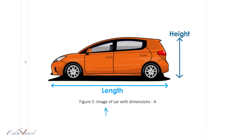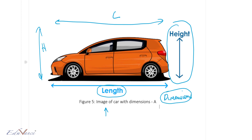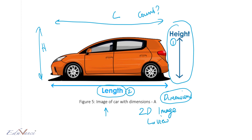Now if you look at this image, I can see the height of the car and the length of the car. Both the height and length are called dimensions — in short we call them D. So how many dimensions are there in this view? I count 1 and I count 2, so we will call this a 2D image or a 2D view of the car.